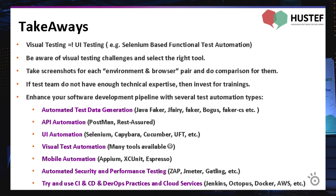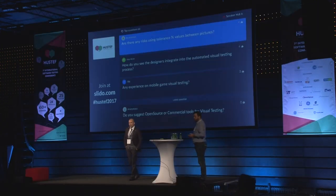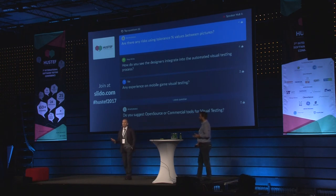Q&A: Are there any risks using tolerance values between pictures? Of course there are risks. Applitools has its own algorithm to handle this using the Strict match level, but you have to tune those tolerance levels. For example, you might start with maybe 5% tolerance. If it works for you, go with it. But it's always a risk — you have to play with the tolerance levels as much as possible.